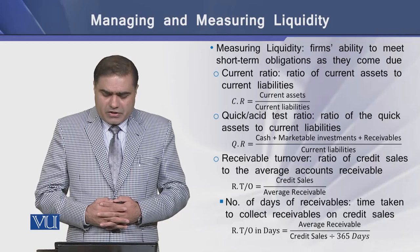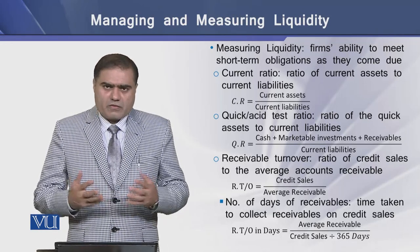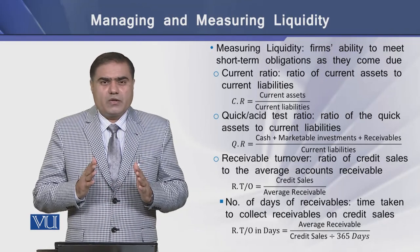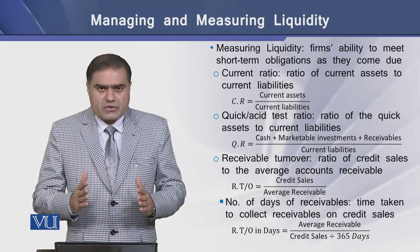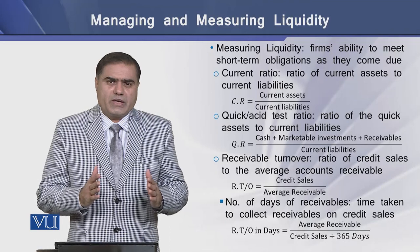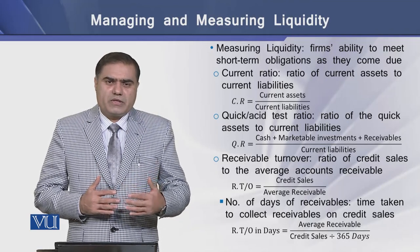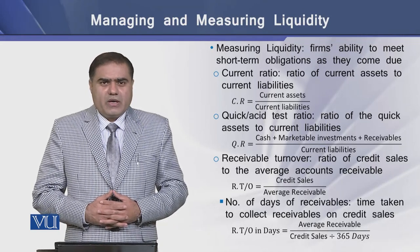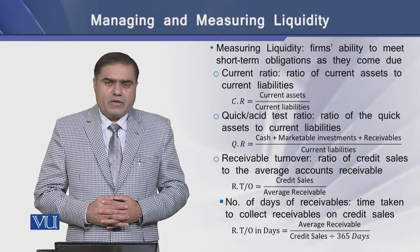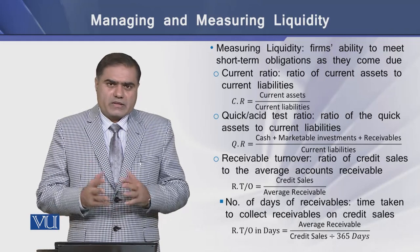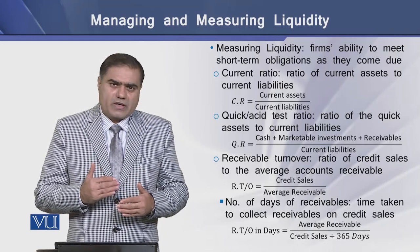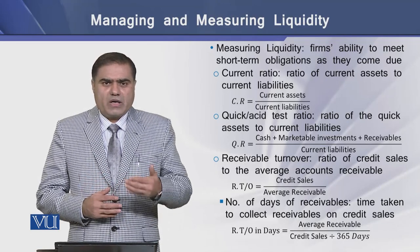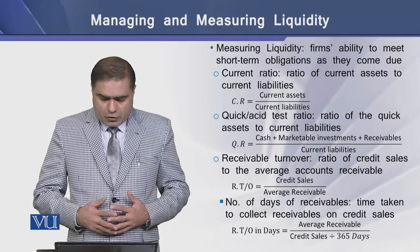Measuring liquidity means assessing the firm's ability to cover its short-term obligations as they become due. There are certain tools in the form of ratios that can be computed and used to analyze the firm's liquidity level. The first is the current ratio, which sets out the firm's ability to pay off its current liabilities out of its current assets. The standard ratio is perceived to be a ratio of two.